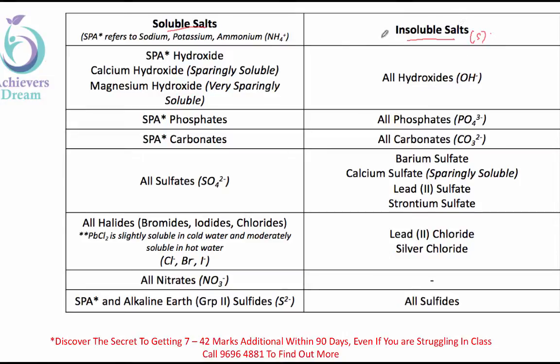So all hydroxides are insoluble except SPA, sodium, potassium, ammonium. So SPA is the safest, especially for precipitation reaction. I'm going to elaborate why later. So all these are soluble. SPA is phosphate, SPA is carbonate. All sulfates are soluble except BCLS. This is what I teach my students. Alternatively, you can leave out S. Some students learn it as CLB. All halides are actually soluble except lead and silver. So all nitrates are soluble and all sulfides is something extra for you.